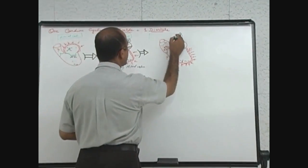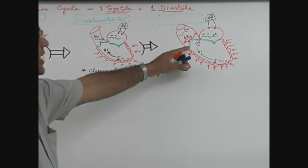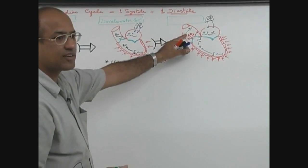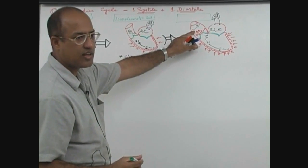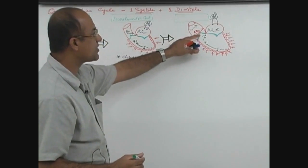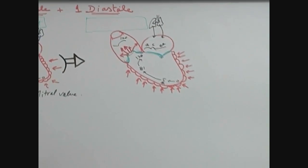This phase during which ventricle is very rapidly ejecting the blood into arterial tree, especially into aorta which is elastic vessel, and as blood is rapidly entering from the ventricle to aorta, due to its elastic compliance it stretches out.